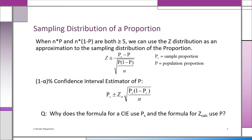Remember way back when we talked about the central limit theorem and the sampling distribution of the sample mean? Well, sometimes we want to make inferences about other population parameters and we have to know the sampling distribution. In this lecture, we're talking about the sample proportion as an estimator, or using it to make inferences about the population proportion. So we need to know something about the sampling distribution of a proportion.